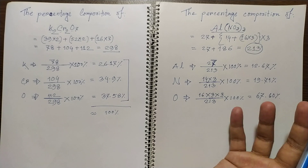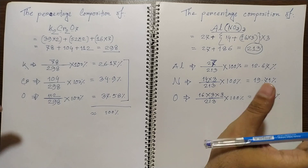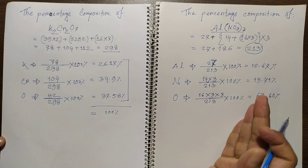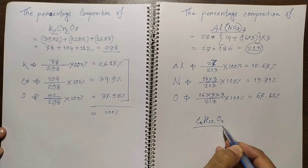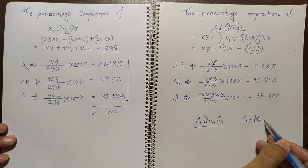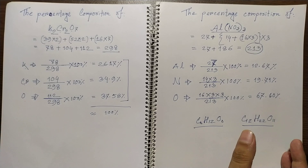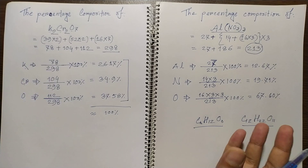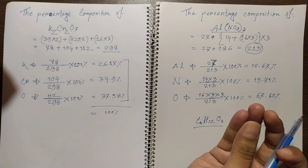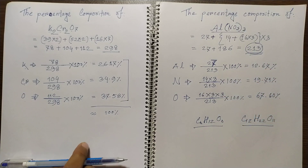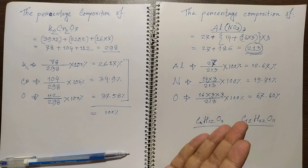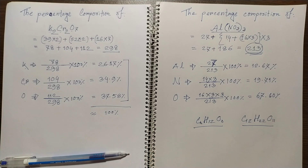This is a very simple process. For those facing trouble for the first time, this is how we find percentage composition. You can also try it with glucose C₆H₁₂O₆ or sugar C₁₂H₂₂O₁₁. Whatever the compound, find the atomic mass of each element, the number of atoms, and the molecular mass of the compound. I hope you understand this basic chemistry concept in stoichiometry. Thank you so much, see you in the next video.